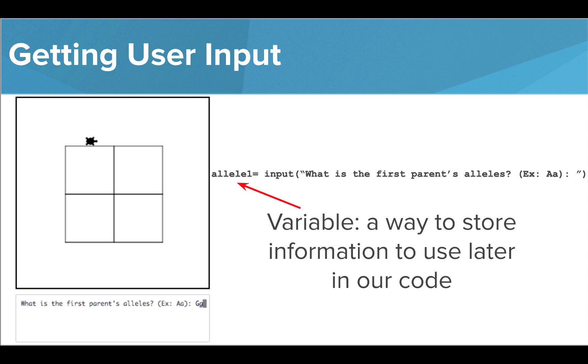We're going to save the information the user types in a variable called allele1. We don't want to use any spaces in our variable names, which is why we're writing this all as one word.